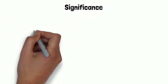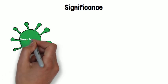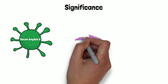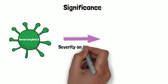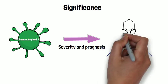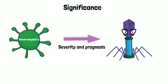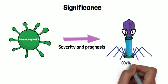Let's explore the significance of this. This is useful because serum amyloid A levels can predict severity and prognosis of COVID-19 cases. This could be valuable in treating COVID-19.